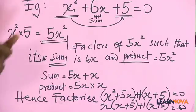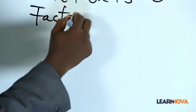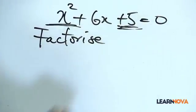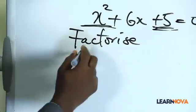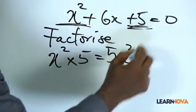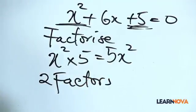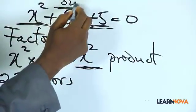After that is done, what you do is to then check the factors of 5x squared, such that whatever factors is brought, which is 2, you know we're talking about quadratic expression. And I did tell you that every quadratic expression has two solutions. Now, if I decide to use my factorization, I want to factorize this expression.